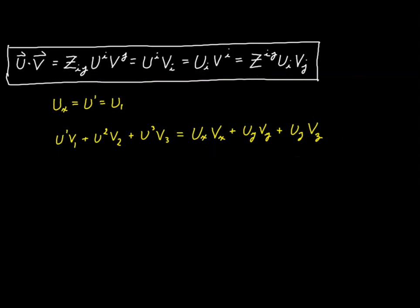This leads us to a very important principle. Suppose I come across an expression and I know from its structure that it is an invariant tensor expression, and then I discover that it's true for Cartesian coordinates. If that's the case, I have to conclude that the expression is true for any coordinate system. If I know I have an expression that works for one coordinate system and it's also an invariant tensor equation, I know it must work for all coordinate systems.